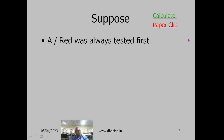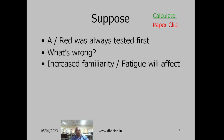What is the problem with this experimental plan? Calculator A is always used first. When you are entering numbers in calculator A, you become familiar with that set of numbers. If you are entering the same set of numbers in calculator B later, you are more familiar with the numbers, so you may be able to enter them faster. Increased familiarity may affect your results.